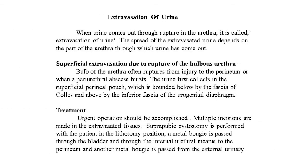Extravasation of urine: when urine comes through a rupture in the urethra, it is called extravasation of urine. Its spread depends on the part of the urethra through which the urine has come out. Superficial extravasation due to rupture of the bulbous urethra: the urine first collects in the superficial perineal pouch, bounded below by Colles' fascia and above by the inferior fascia of the urogenital diaphragm. This space is closed posteriorly by the fusion of the two fasciae and laterally by their attachment to the ischiopubic rami.